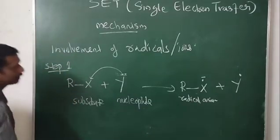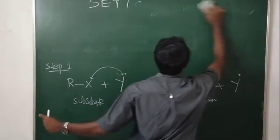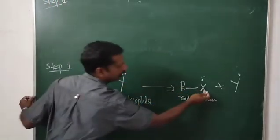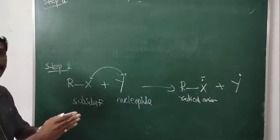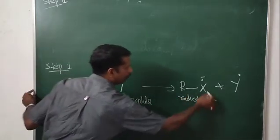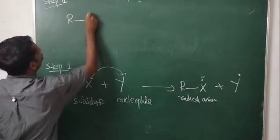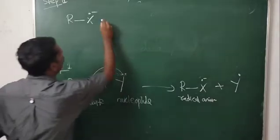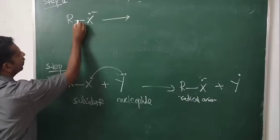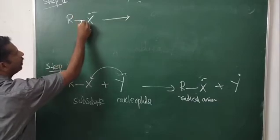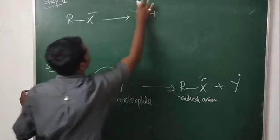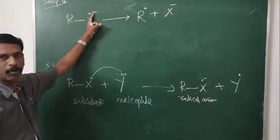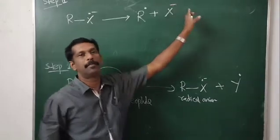In Step 2, what is happening? The radical anion is unstable and it will undergo immediate cleavage. RX with a single electron and a negative charge will undergo cleavage. One electron will come to R, and we get R free radical plus X minus — X is getting an electron back and becomes X minus. This is the second step: formation of R free radical.